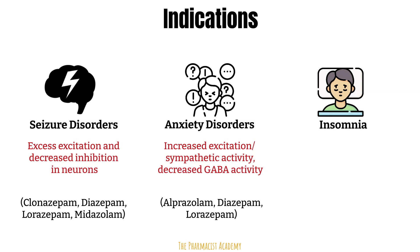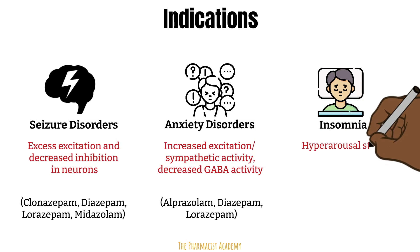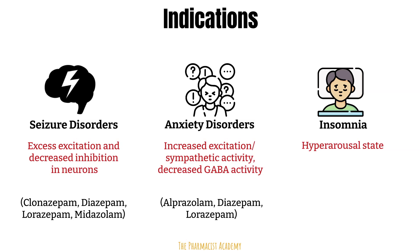Insomnia is often considered to be a disorder of hyperarousal or increased neuron firing and activation. Benzos have been shown to increase sleep time and improve sleep quality by reducing the time it takes to fall asleep. Some benzos used for insomnia include flurazepam, temazepam, and triazolam. Temazepam and triazolam are preferred because they have a fast onset and a short half-life — we don't want the patient to be drowsy all day.